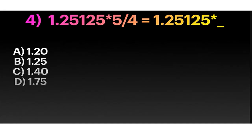Question four would be 1.25125 times 5 fourths equals 1.25125 times blank. We can just do 5 fourths, but we can't really get an answer. None of the A, B, C, or D is 5 fourths. 5 fourths, if you noticed, is an improper fraction. An improper fraction means when a numerator is greater than the denominator. Now we have to change it to a mixed number.